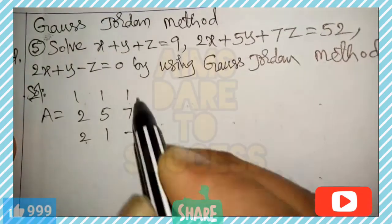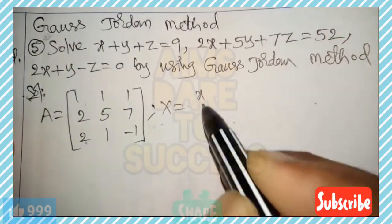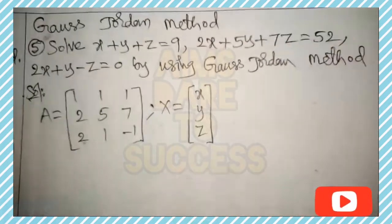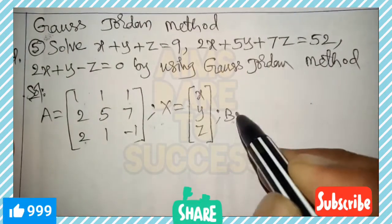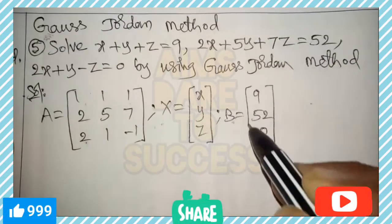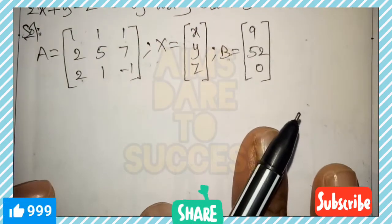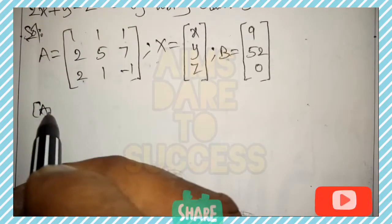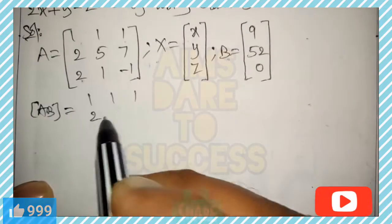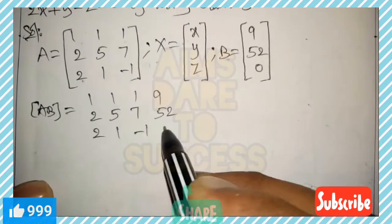Write a matrix using the xyz coefficients from the three equations. First equation coefficients: 1, 1, 1. Second equation: 2, 5, 7. Third equation: 2, 1, -1. X is the variable column, B is the constant column with values 9, 52, 0 written column-wise. Combine A and B into one augmented matrix: [1 1 1 | 9], [2 5 7 | 52], [2 1 -1 | 0].